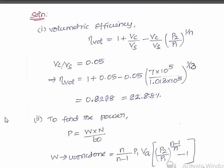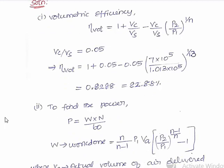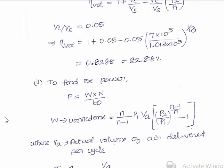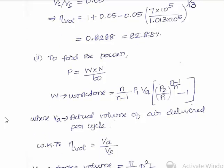The second part is to calculate the power supplied to the compressor. The power output formula for a single-acting single-stage compressor is P = W × N/60, where N is the speed. The work done W for a polytropic process is: W = [n/(n−1)] × P1 × VA × [(P2/P1)^((n−1)/n) − 1]. Here VA is the actual volume of air delivered per cycle, found using volumetric efficiency = VA/VS.